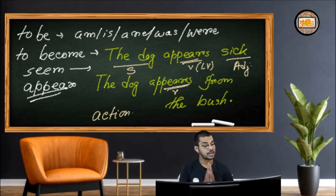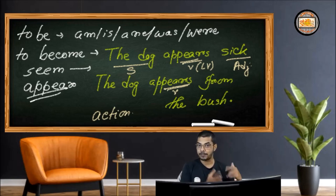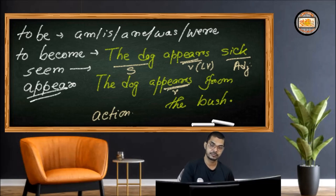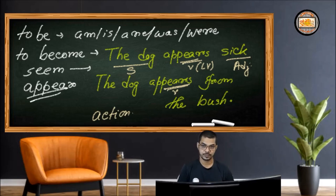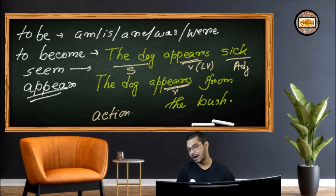The last point that's very important to remember: 'the dog appears sick' — you cannot say 'the dog is appearing sick.' It's not possible. You cannot have a continuous or progressive form for these linking verbs. So this is what we have to learn about linking verbs. We are returning very soon with another discussion in Shikshya Mantra. Till then, bye-bye. Happy learning.